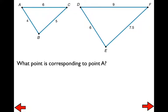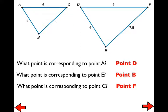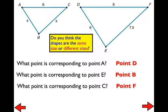What point corresponds to point A? That would be point D. Point A and point D are the ones that match up. If I were to move triangle ABC on top of triangle DEF, the corresponding point to E would be point B, and the corresponding point to C would be point F. The shapes are clearly different sizes because the scale factor was 1.5, not 1.